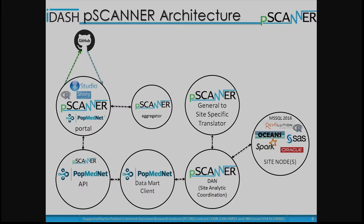This is an overall architecture view of where we'd like to go. There is a portal — PopMedNet client has its own portal and P-Scanner has its portal — and our goal is to integrate the P-Scanner portal as well as pieces of the PopMedNet portal through the API with the PopMedNet data mark client, so you can set up your trials, set up your studies, do your data access views and regulatory pieces in either or both of these portals.